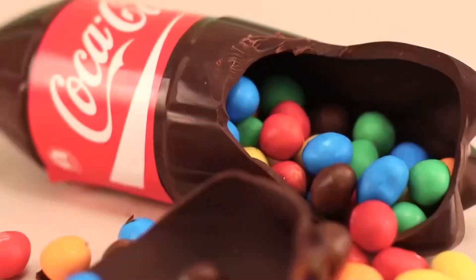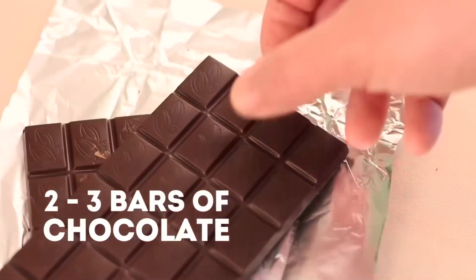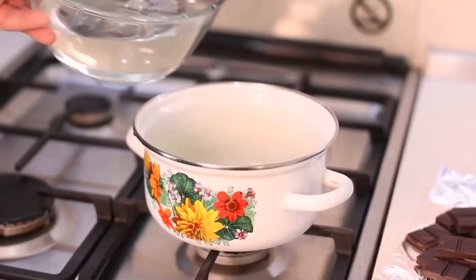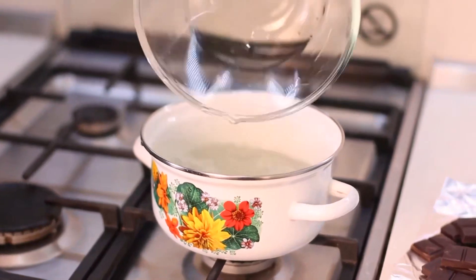And now, we'll show you how to make a chocolate bottle. To do this, we'll need 2-3 chocolate bars, which we will melt in a steam bath.